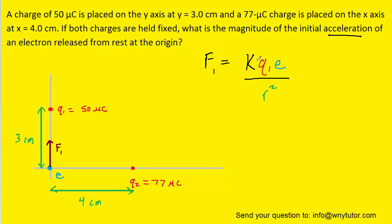We're going to calculate f1 by plugging in the constant, the magnitude of charge on q1, the magnitude of charge on the electron, and the distance between them. Note that the distance needs to be converted into meters, and the charge needs to be converted into coulombs by multiplying by 10 to the minus 6.